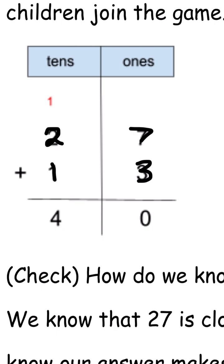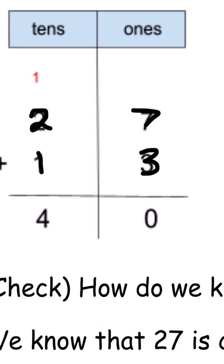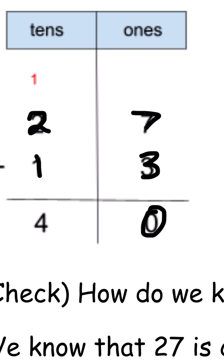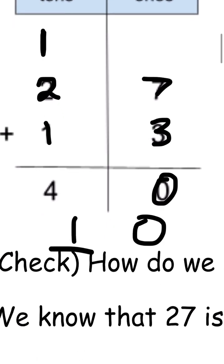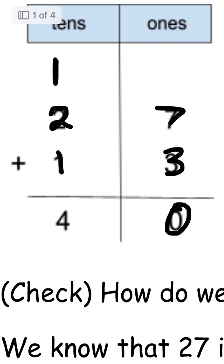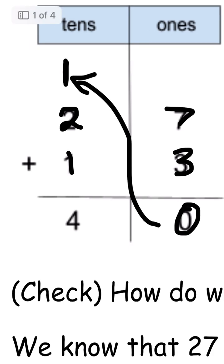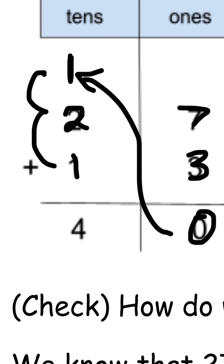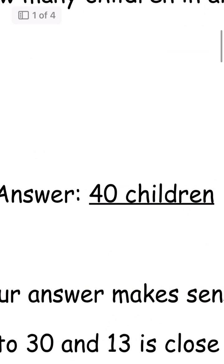If you add 7 and 3, we get 10. But we can only put the ones place digit on this side. So if we have 10, the 0 goes on the ones place, and we have to put the 1 on top because the 1 is on the tens side. So now we have to add 1 plus 2 plus 1, and we get 4. So the answer is 40 children.